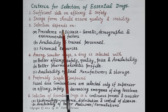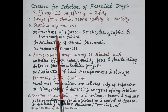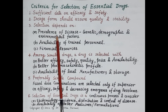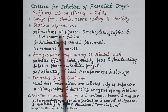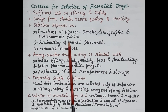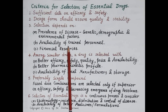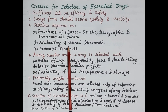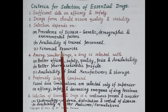The selection of an essential drug depends upon the prevalence of disease, that is the percentage of population with that disease at a specific period of time, which depends upon genetic, demographic, and environmental factors. Other factors include the availability of trained personnel to administer the drug and, most importantly, the financial resources to obtain the drug.